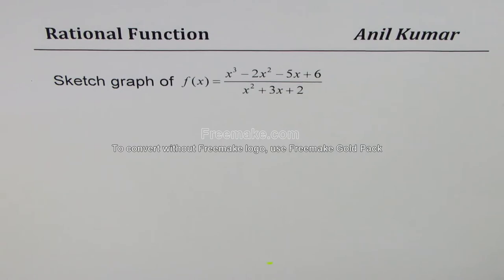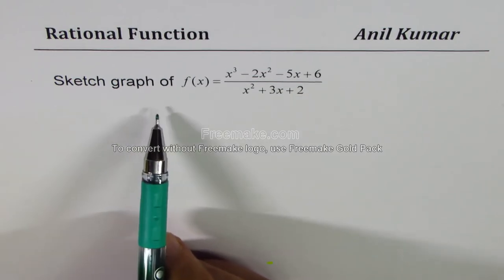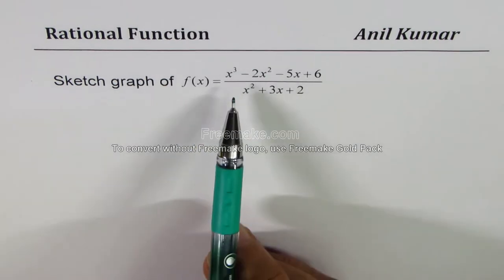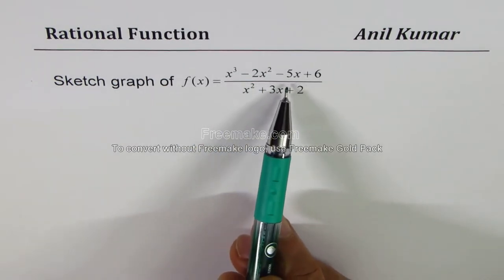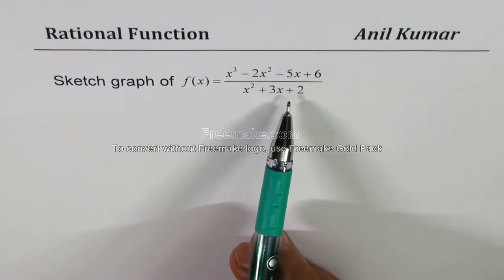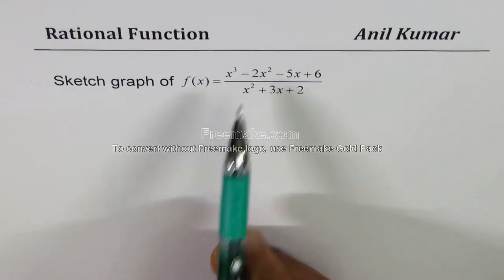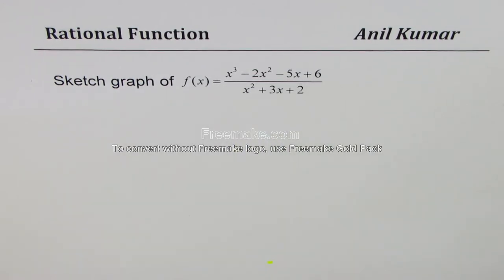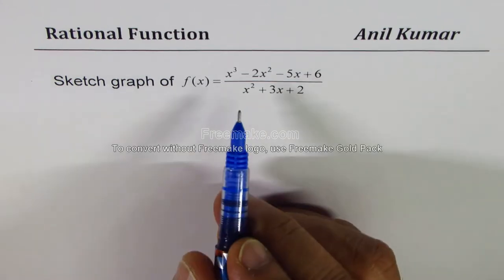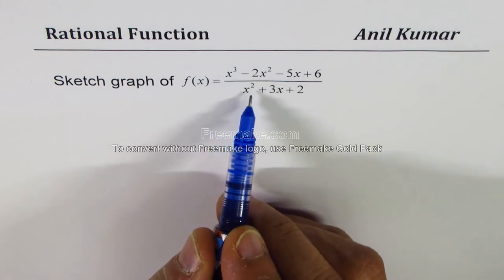I'm Anil Kumar sharing with you a technique of sketching rational functions with oblique asymptotes. The question here is to sketch the graph of f(x) = (2x³ - 2x² - 5x + 6) / (x² + 3x + 2). In this video we'll see how to find the oblique asymptote and how to analyze the end behavior. The degree of the numerator is 3 and that of the denominator is 2.